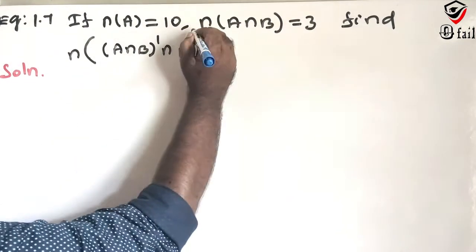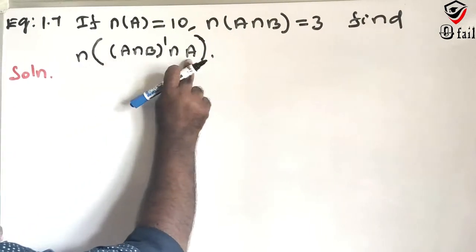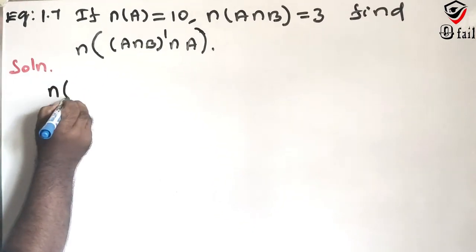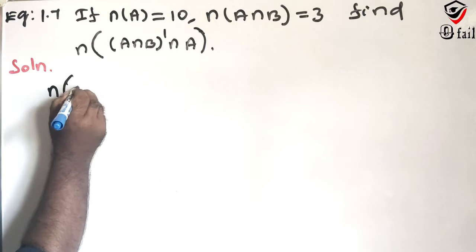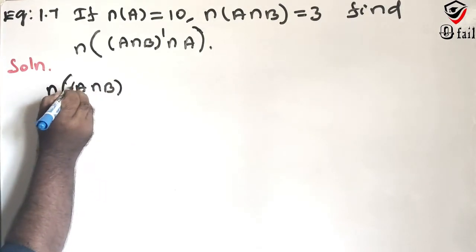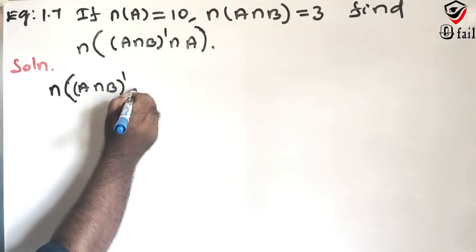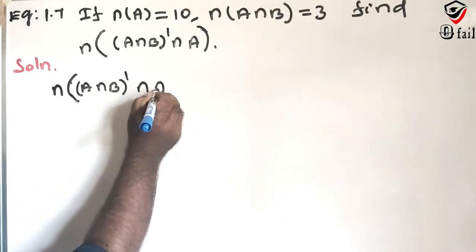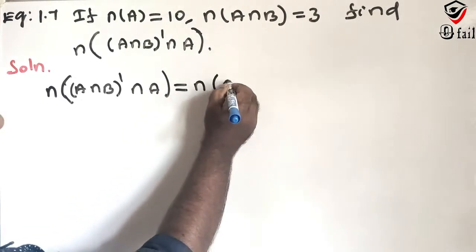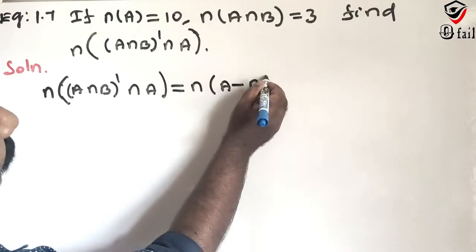This is a very clever kind of problem, actually two more in the given part. This is our direct formula: n of A intersection B whole dash intersection A equals, this is what the formula is. n of A difference B, this is the formula.